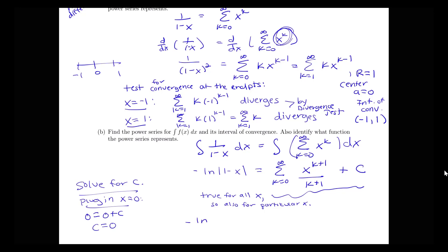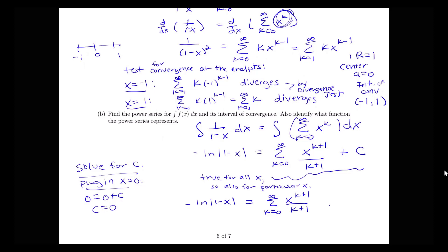So negative log(1 minus x) equals the sum from k equals 0 to infinity of x to the k plus 1 over k plus 1. Notice that plugging in k equals 0 gives x, k equals 1 gives x squared over 2, k equals 2 gives x cubed over 3, etc. Re-indexing, this is the sum from k equals 1 to infinity of x to the k over k, which simplifies things for finding the interval of convergence.